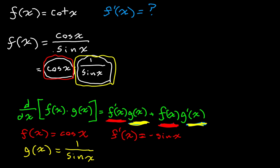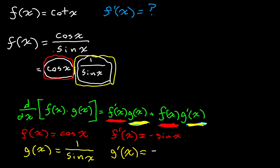We actually did a video on this — the derivative of the cosecant of x, which is exactly what this is — but I'm going to go through it again here, a bit quicker than in that video. We just have this outer function, 1 over x. We're taking the derivative of that. We get negative 1 over sine squared of x times cosine of x, because cosine of x is the derivative of our inner function sine of x, and negative 1 over x squared is the derivative of our outer function, except we plug in the inner function sine of x. That simplifies to negative cotangent of x times cosecant of x.